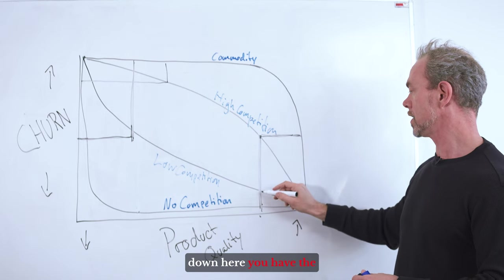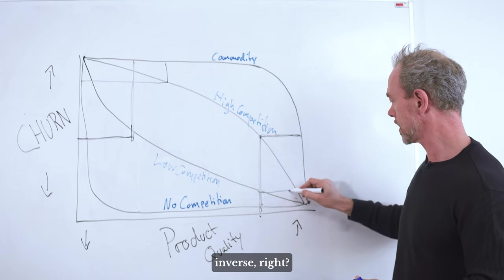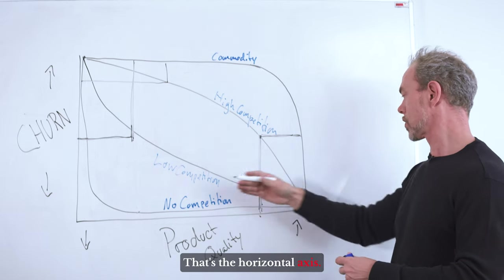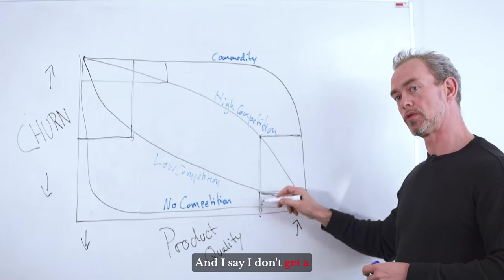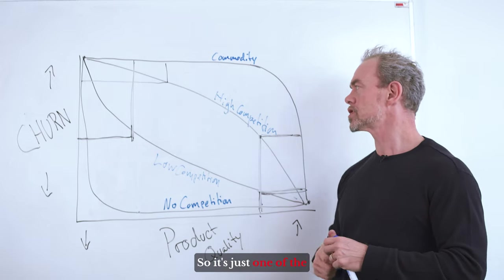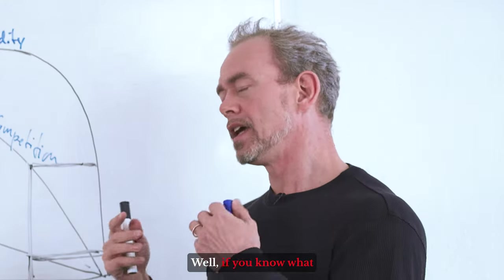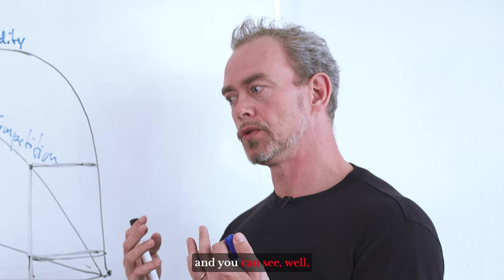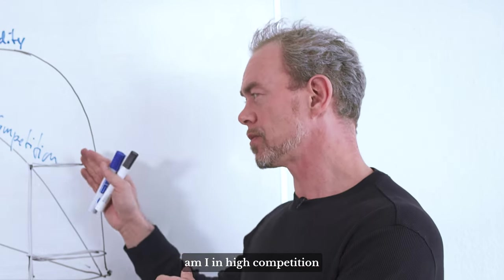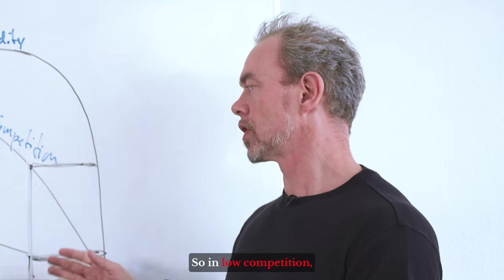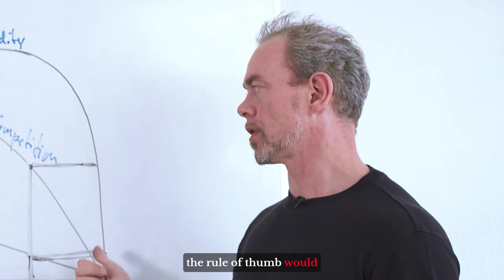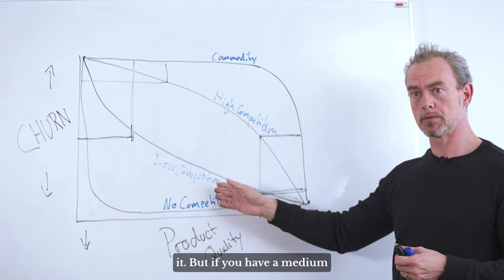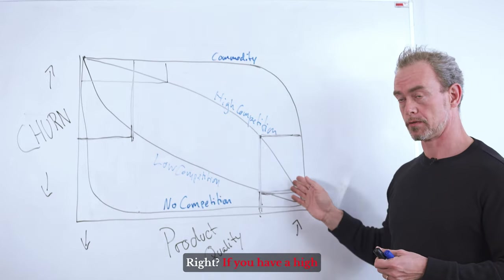On the other end down here, you have the inverse. I need to do a lot of product quality, that's the horizontal axis, and actually I don't get a lot of churn improvement. So if you know what kind of market you're in and you can see, am I in high competition or low competition? In low competition, the rule of thumb would be, if you have a really poor product, invest in it, but if you have a medium product, don't.